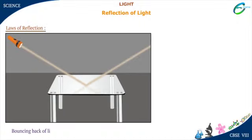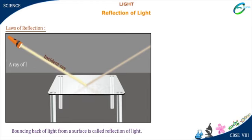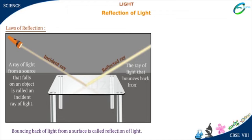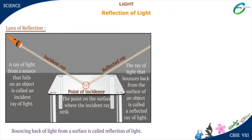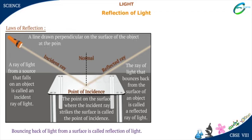This phenomenon of bouncing back of light from a surface is called reflection of light. Reflection of light occurs on all types of surfaces, whether shiny or not. A ray of light from a source that falls on an object is called an incident ray of light. The ray of light that bounces back from the surface of an object is called a reflected ray of light. The point on the surface where the incident ray strikes the surface is called the point of incidence. A line drawn perpendicular on the surface of the object at the point of incidence is called the normal at the point of incidence.